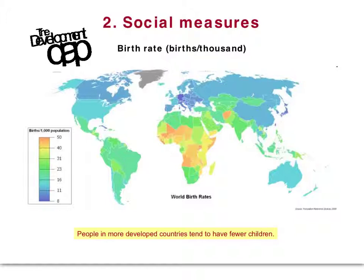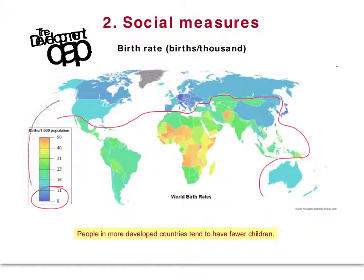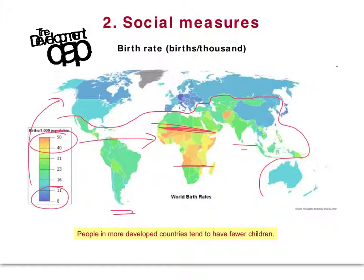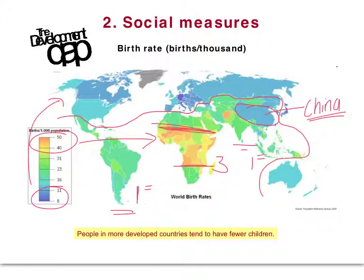The next social measure is birth rates — the number of births per thousand of the population per year. As we know from the Demographic Transition Model, higher birth rates imply a less developed country, while lower birth rates occur in more developed countries. On the map, blues dominate MEDCs. Sub-Saharan Africa clearly has the highest birth rates. South America and Asia are more similar, and there's a large blue area for China due to its one-child-per-family population policy. So Africa, especially Sub-Saharan Africa, is clearly in third place, with Asia and South America roughly equal first.